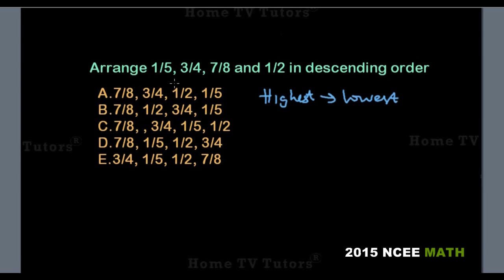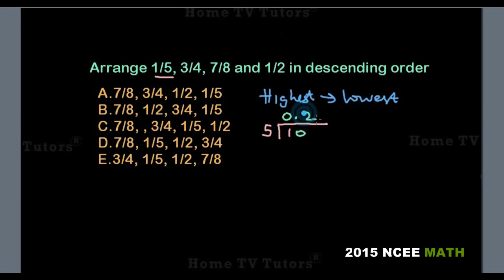First, let's convert 1 over 5. We divide 1 by 5. 5 into 1 is not possible, so we add 0 and a decimal point. We can now add 0 to it. 5 into 10 is 2. So 1 over 5 equals 0.2.